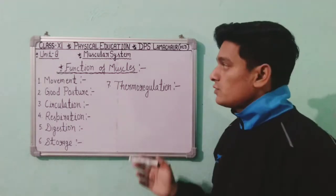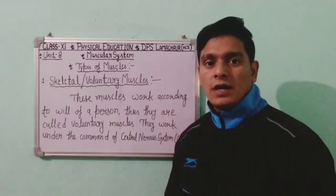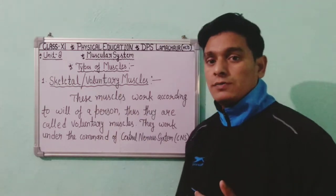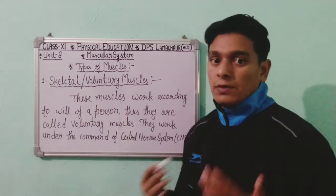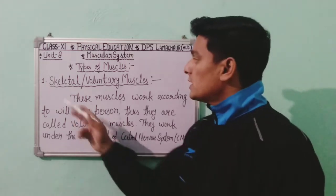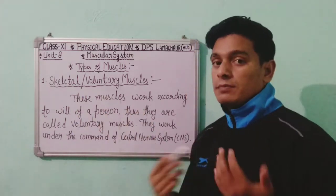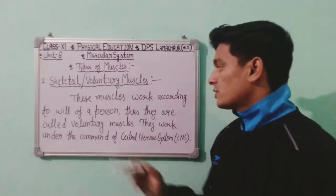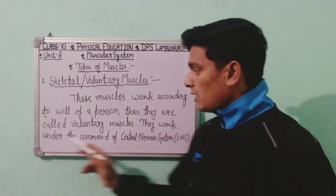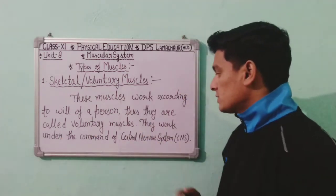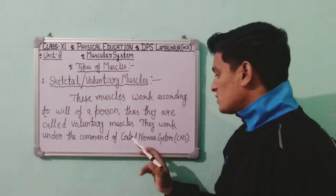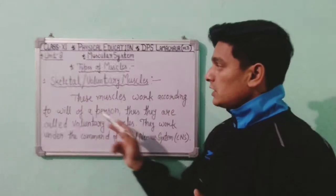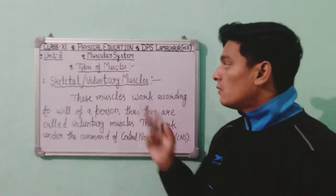Now let's know about the types of muscles. There are three types of muscles. The first is skeletal or voluntary muscles. These muscles work according to the will of a person, which is why they are called voluntary muscles. They work under the command of the central nervous system (CNS).